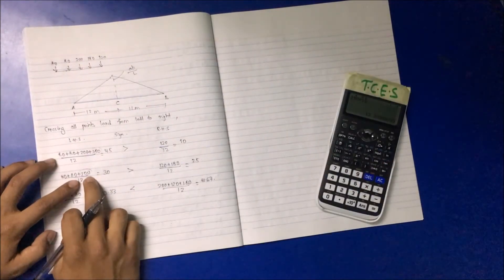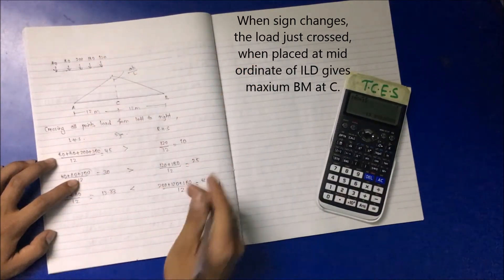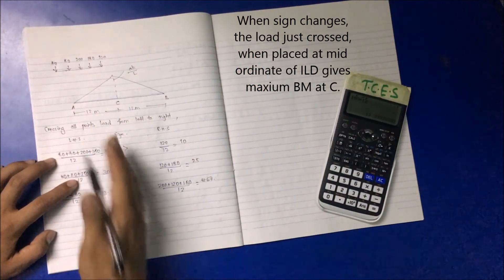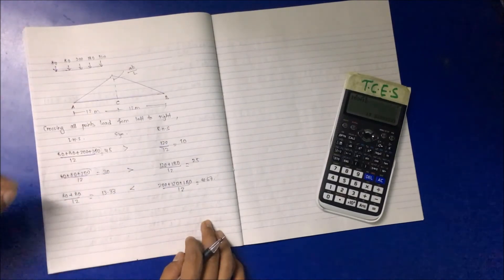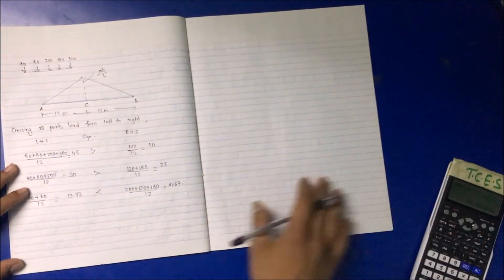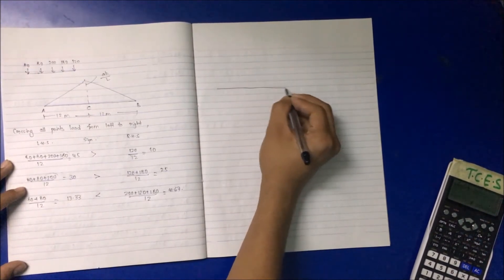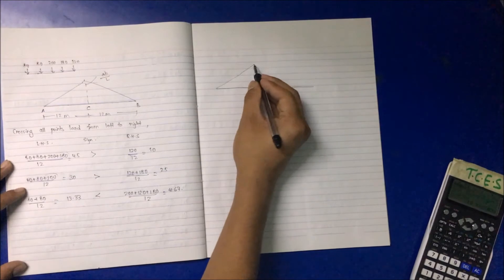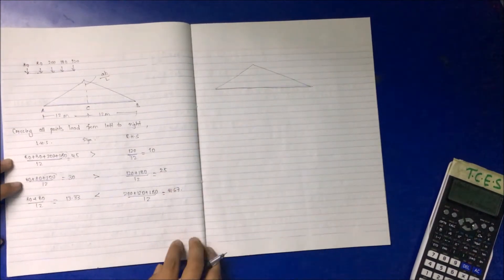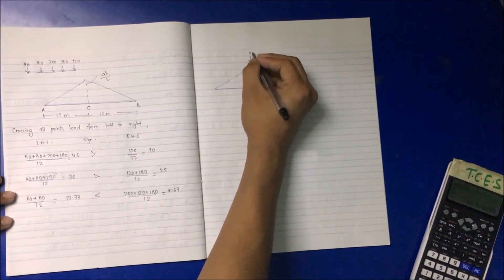Since the right side is now greater than the left side, this means when the 200 kN load comes towards the right portion — that is, when 200 kN crosses towards the right portion — maximum bending moment occurs. This suggests that 200 kN should be acting at the critical point.